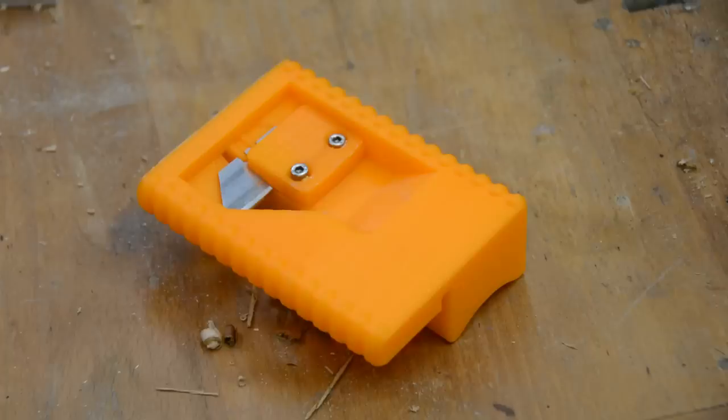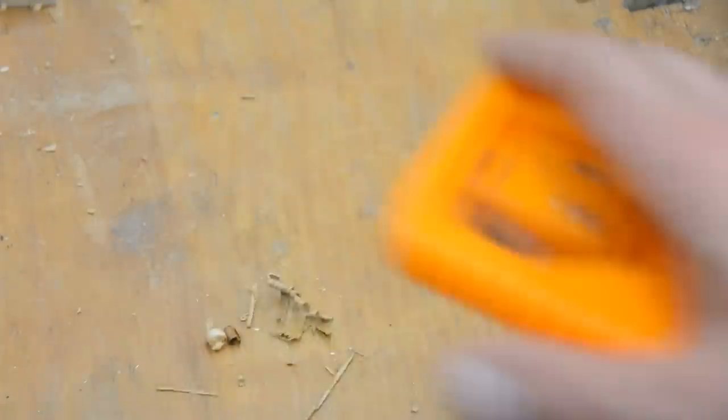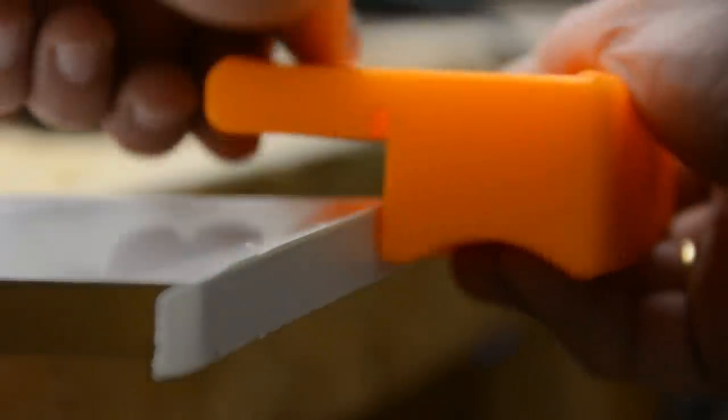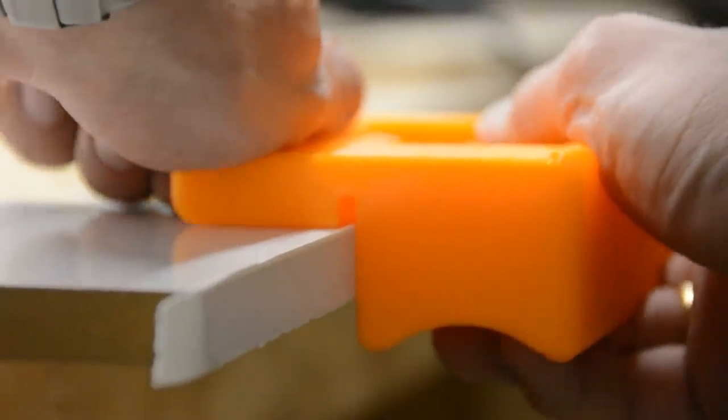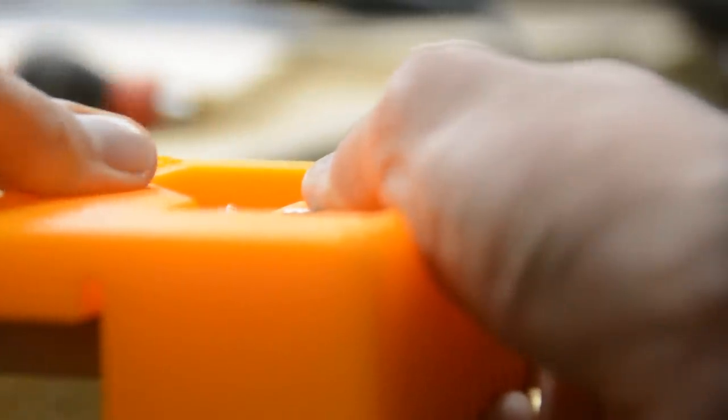Number 3 – edge banding trimmer. I found this design on Thingiverse and love it. You simply put the blade of a utility knife in the jig, screw it tight, and it makes trimming edge banding super simple and easy.